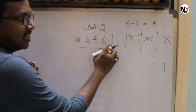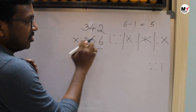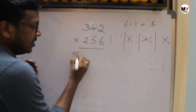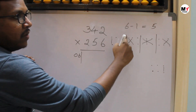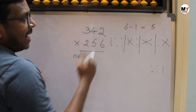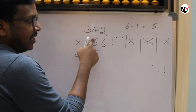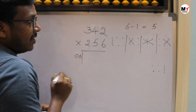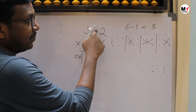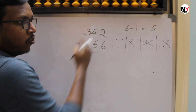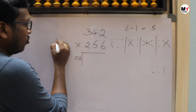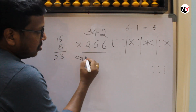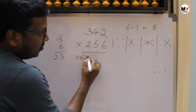First step: multiplying first digit with first digit — 2 times 3 is 6. Always double digits: 06. Then multiply vertically and add them: 3 times 5 is 15, and 4 times 2 is 8. 15 plus 8 is 23. So we write 23.